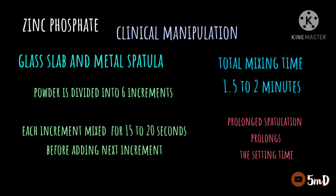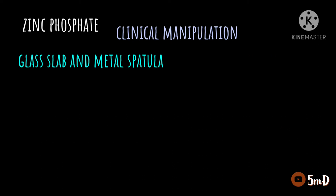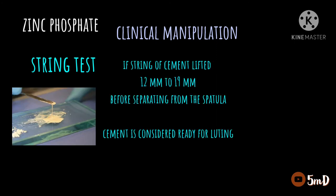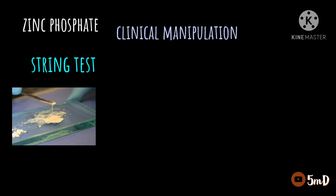To find out whether the mixed cement is ready for luting, the string test is used. If a string of cement can be lifted up to 12 mm to 19 mm from the glass slab using a spatula, the cement is ready for luting. If the string extends greater than 19 mm, the cement is too viscous and is not ideal for luting.